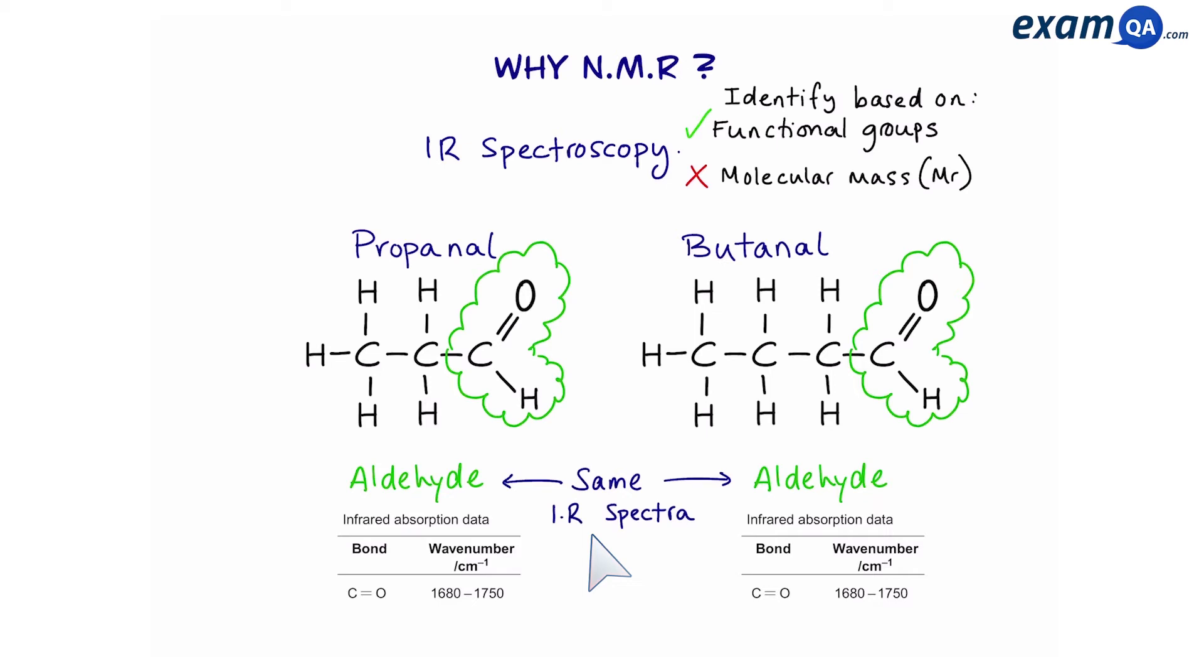However, we know that propanal has an MR of 58 and butanil has an MR of 72. Since IR spec doesn't tell us about molecular mass, we will not be able to use it to distinguish between these two different molecules.